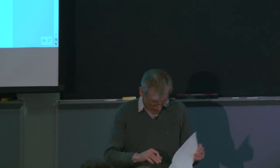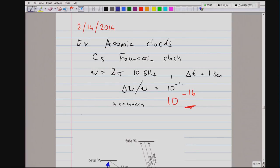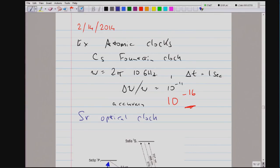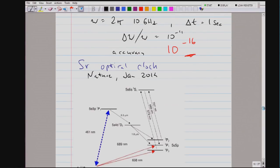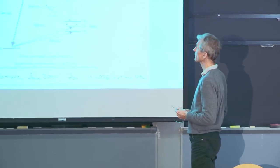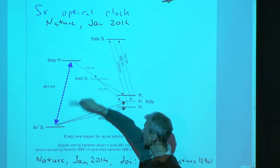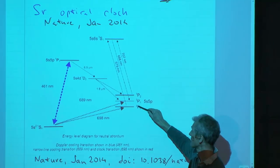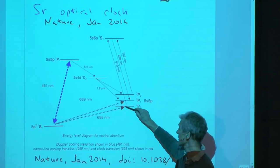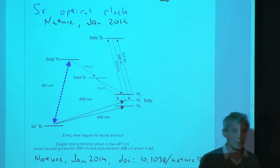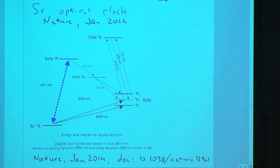The other example is the strontium optical clock, and there was a really nice paper in Nature just a few weeks ago. Here is a level diagram of atomic strontium. There is a very fast S-to-P transition for laser cooling and trapping. But then there is a very slow, forbidden transition to a triplet state which is metastable — those states have a very long lifetime, and therefore this transition is extremely narrow.